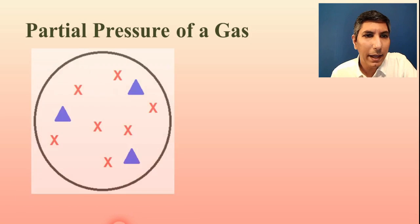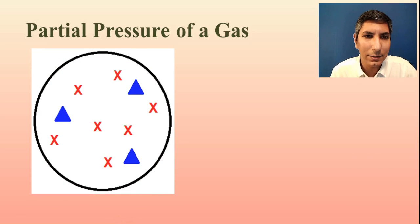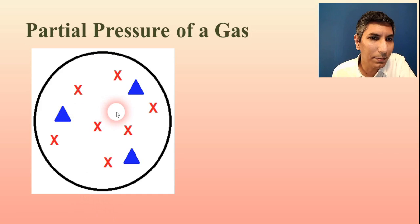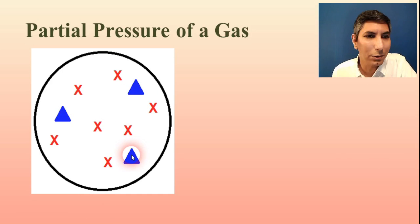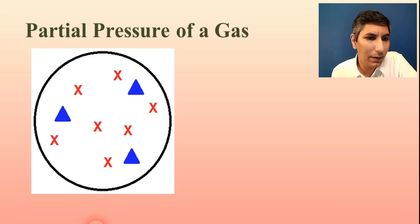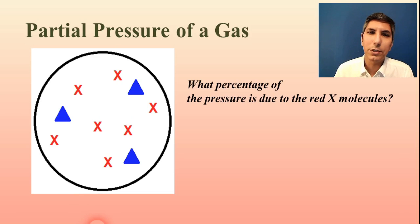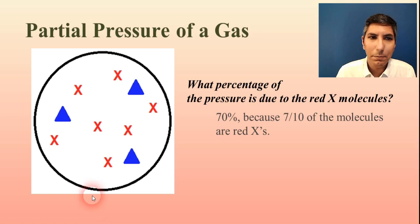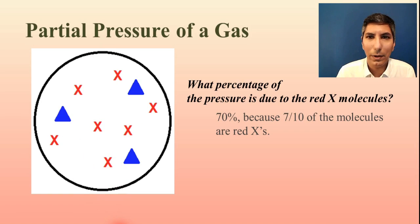Let's imagine that we have a gas container that has a whopping 10 molecules of gas in there. You can see the 10 molecules — three of those molecules are blue triangle molecules, and then seven of those molecules are red X's. If I were to ask you what percentage of the pressure is due to the red X molecules, it's 70%, because seven out of the 10 molecules in that container are red X's.